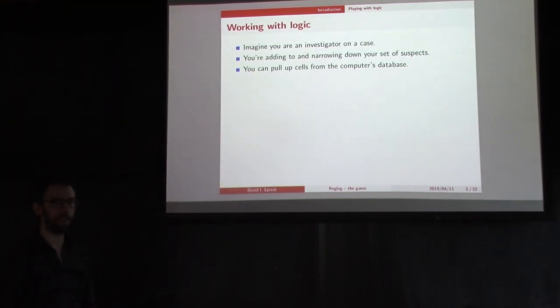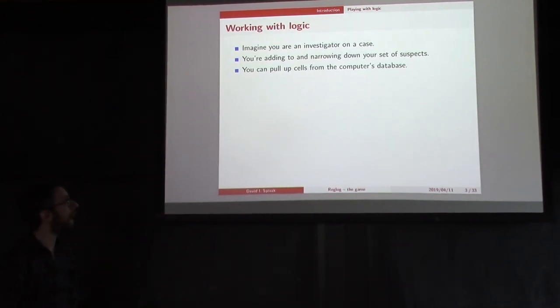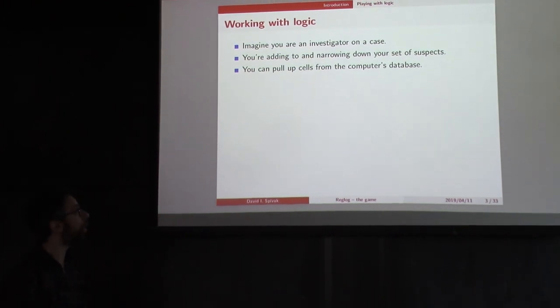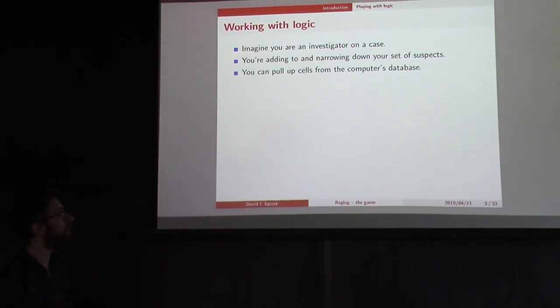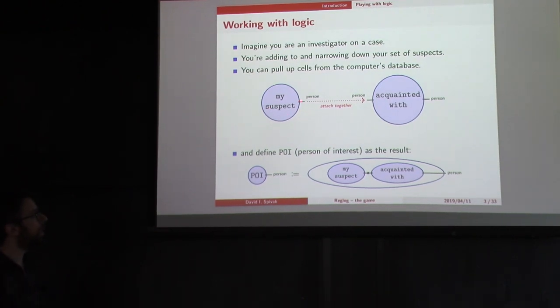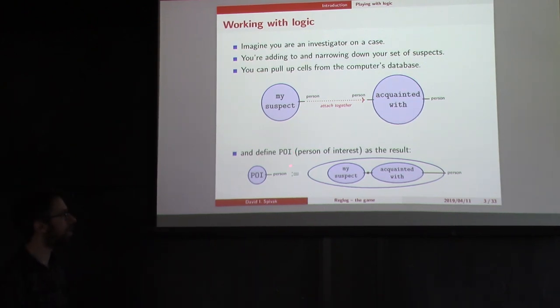This is brought to you by this idea we have for a game, some software we want to create called Regular Logic the Game, Riglog the Game. Imagine you're an investigator on the case, and you're adding to and narrowing down a set of suspects. What you can do is you can pull up cells from a computer's database. You pull up my suspect, it has this person port. You drag it over, attach it to acquainted with, which also has a person port, and you define POI, a person of interest, to be the result of connecting someone that my suspect is acquainted with.